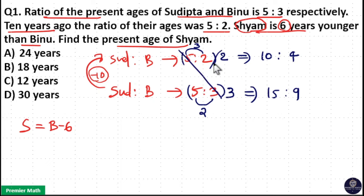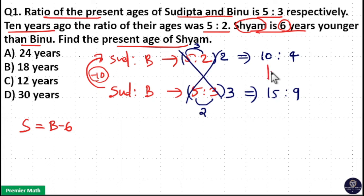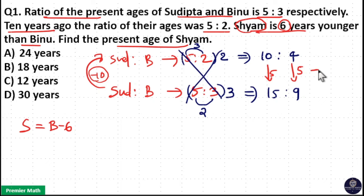Now, leave this part and take the new ratio. You can see that the difference between the 10 part and 15 part is equal to 5. And the difference between the 4 part and 9 part is also equal to 5 parts. So 5 parts is equal to 10 years.